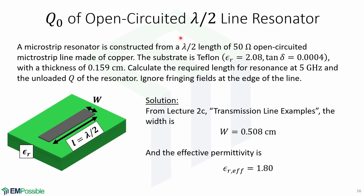Now let's look at another example for an open-circuited half-wavelength line resonator. A microstrip resonator is constructed from a half-wavelength length of a 50-ohm open-circuited microstrip line made of copper. The substrate is Teflon with relative permittivity of 2.08, loss tangent of 0.0004, and thickness of 0.159 centimeters. Calculate the required length for resonance at 5 GHz and the unloaded Q, ignoring fringing fields. From a previous lecture on transmission line examples, the width is found to be 0.508 centimeters.